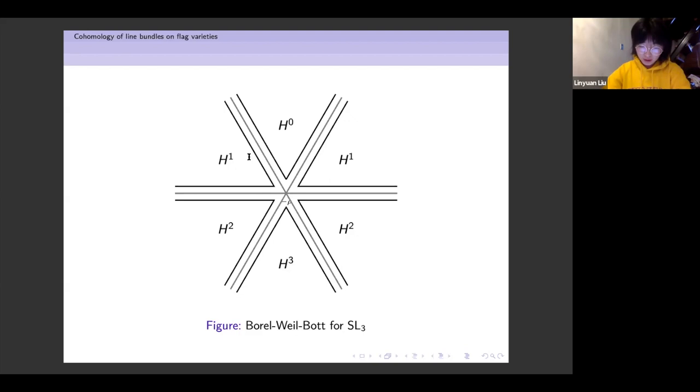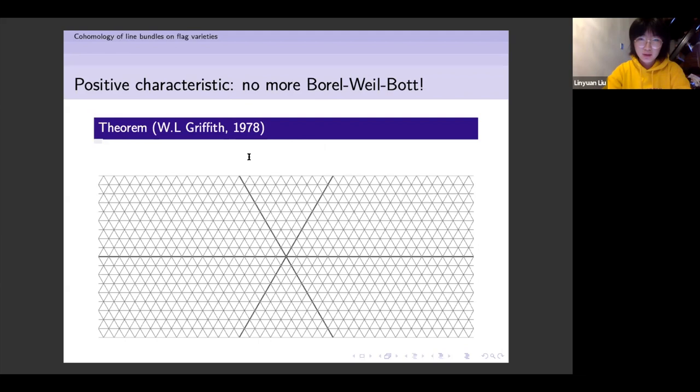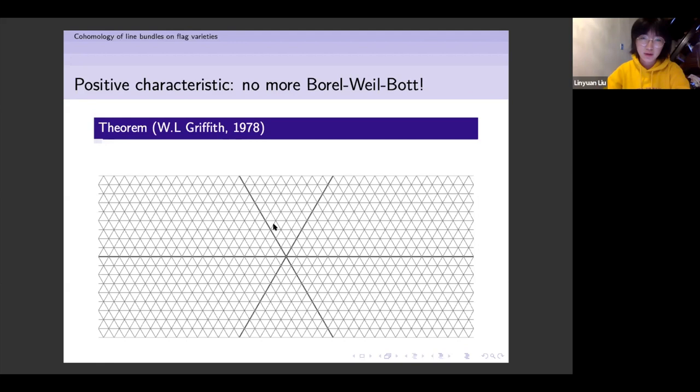Now let's move to positive characteristic. The bad news is that there is no more Borel-Weil theorem. It was in 1978 that people first found examples showing this. Specifically, Griffith found the necessary and sufficient condition for SL_3 and completely determined the vanishing behavior of those cohomologies for SL_3.